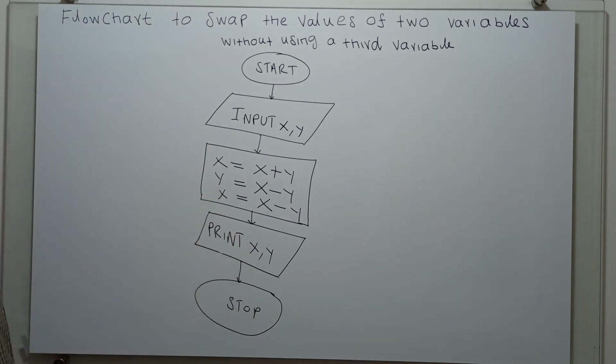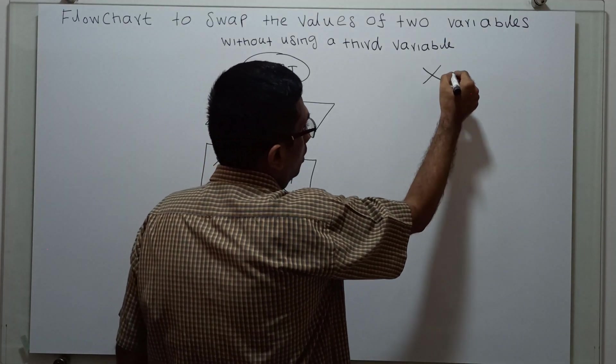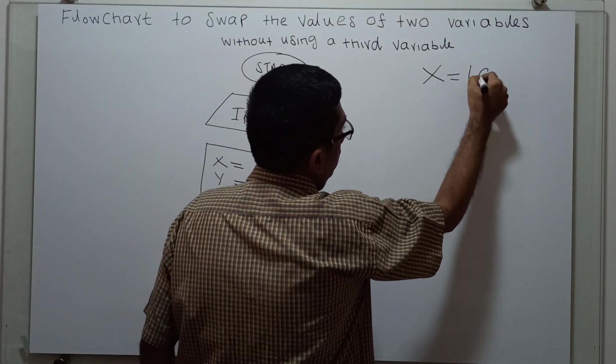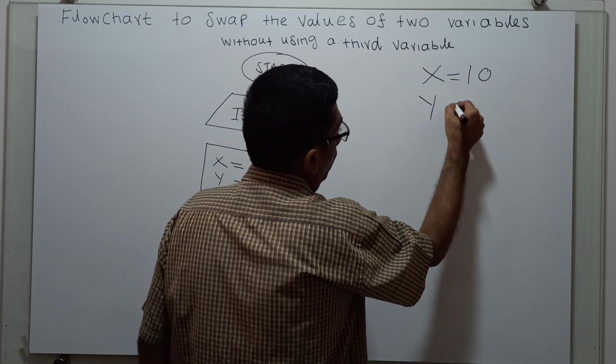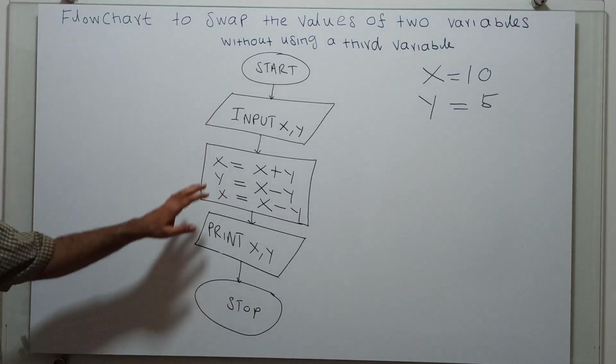Now we will check how this flowchart works. My x value is 10, the y value is 5.